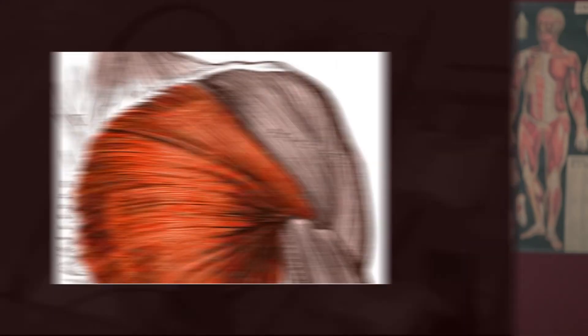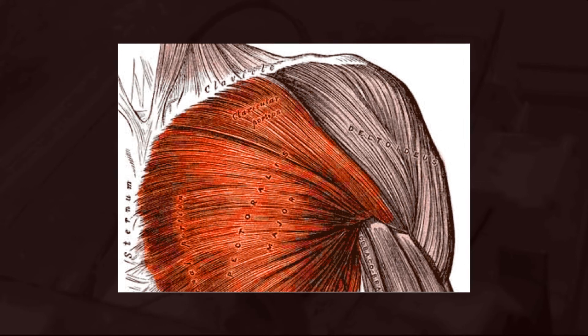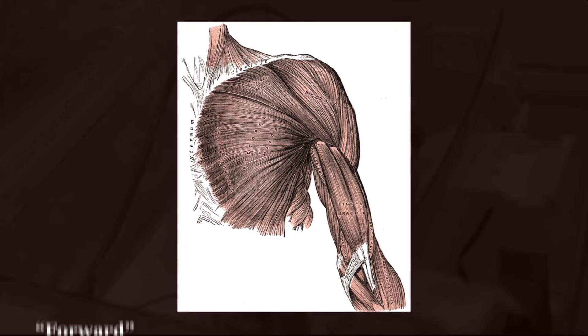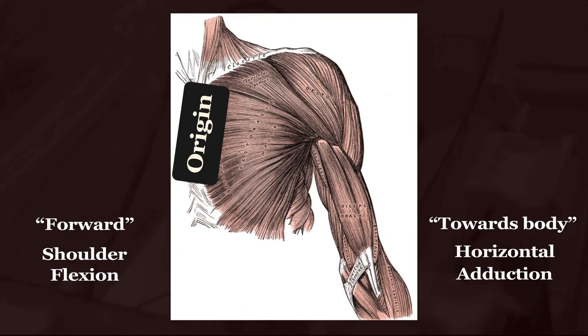Now, the sternocleidomastoid is pretty straightforward since it's a really simple shape, but the same rule applies for funkier looking muscles like the pectoralis. The pec major, aka the Terry Crews, has a super wide origin, touching on everything from the sternum, ribs, clavicle, and some connective tissue. But its insertion is a spot on the humerus, and since the muscle's actions bring the humerus either forward or towards the body, its origin is that big chunk of medial tissue and its insertion is on the humerus. And while it might seem like there are a ton of intricacies in memorizing these components of musculature, if you know the origins and insertions, you can usually figure out the actions and vice versa.